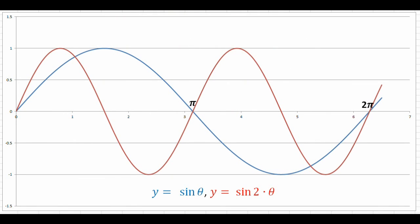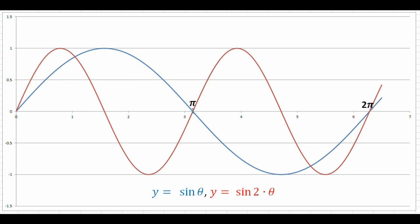Let's begin by looking at this graph. Any pure tone can be represented by a sine wave. In this picture, the blue line represents y equals sine of theta. At zero the sine is zero, at pi over two the value is one, at pi the value is zero again, at three pi over two the value is negative one, and at two pi or 6.28 the sine graph comes back to zero.